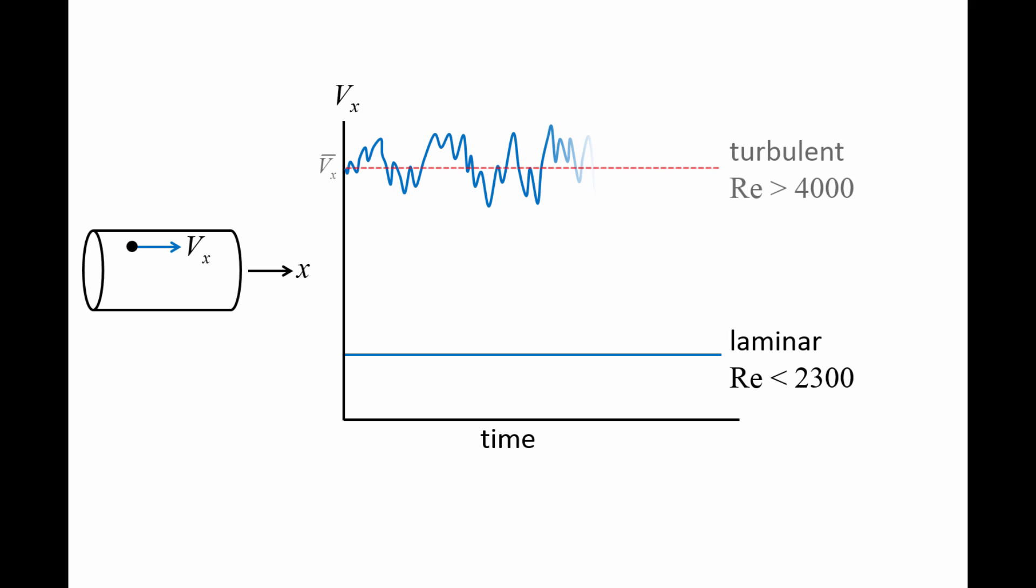For turbulent flows, the axial velocity component varies unpredictably about a mean value, V̄x. The axial velocity is expressed as the sum of V̄x, which does not change in time, plus Vx', which is the deviation of the speed from the mean value. It is Vx' which varies unpredictably in time.